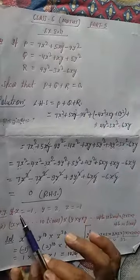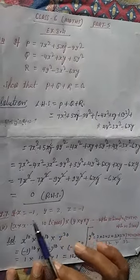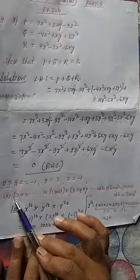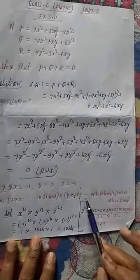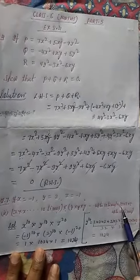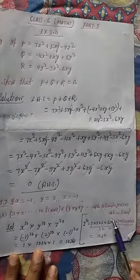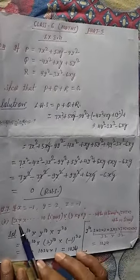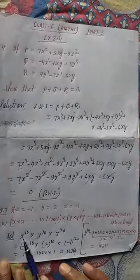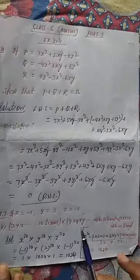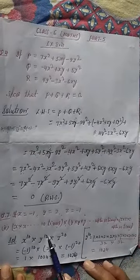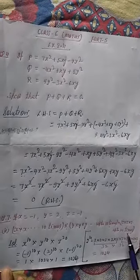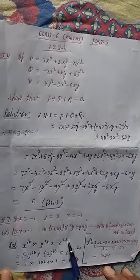Now Question number 7. If x equals minus 1, y equals 2, and z equals minus 1. We need to find x multiplied by itself 10 times, multiplied by y multiplied by itself 10 times, multiplied by z multiplied by itself 20 times. So that means x to the power 10, multiplied by y to the power 10, multiplied by z to the power 20.